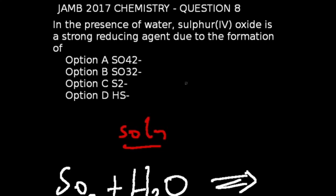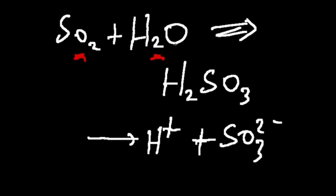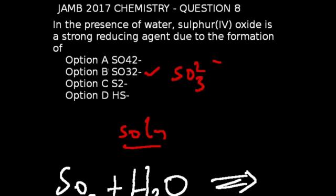In the presence of water, sulfur dioxide is a strong reducing agent — this is question number 8 of the JAM 2017 chemistry exams. The correct answer is option B, which is SO3²⁻ ions. In the presence of water, SO2 reacts with water to give H2SO3, and when dissociated, we get H⁺ ions and SO3²⁻ ions, confirming that the correct answer is SO3²⁻ ions.